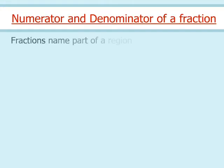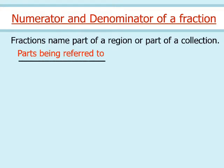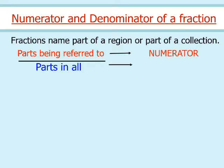Numerator and Denominator of a Fraction. Fractions name part of a region or part of a collection. In a fraction, the number written on top represents parts being referred to, and the number written below represents parts in all, or the total number of equal parts. The top number is called the numerator and the bottom number is called the denominator.